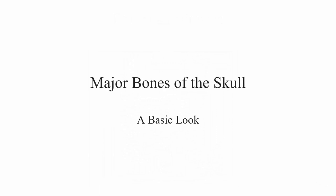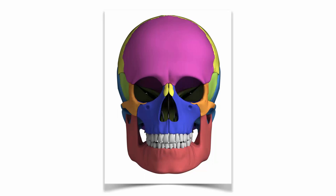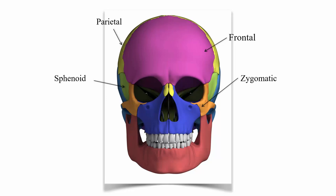Let's take a look at the major bones of the skull. In this color-coded skull, we can see the frontal bone; on the top sides are the parietal bones; then we have the sphenoidal, the zygomatic, the nasal bones, the maxilla, and finally the mandible.